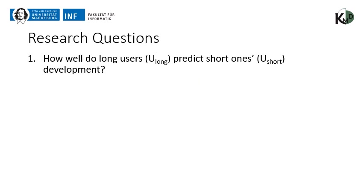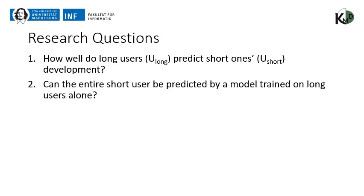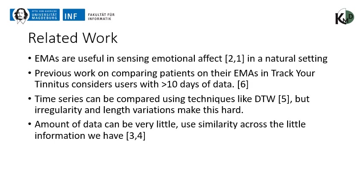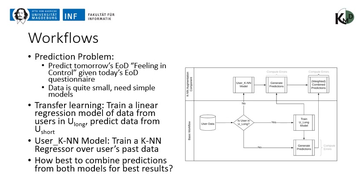From these two groups we ask the following questions: How well can we predict short users given long users — that is, how will short users develop given how long users have developed? Can we predict an entire short user using a model trained on long users alone? This is more complicated than simply predicting unseen data — you're predicting entire unseen patients. Third, how can we incrementally fit a model to get better predictions as short users provide new data?